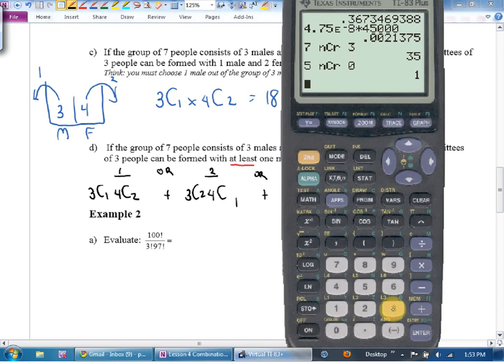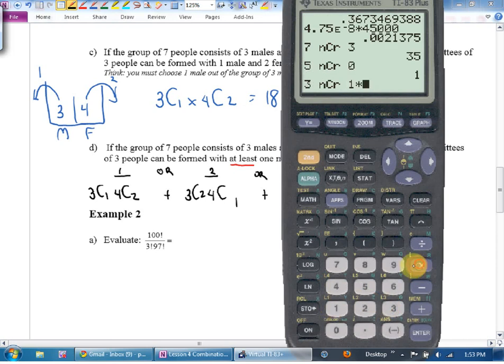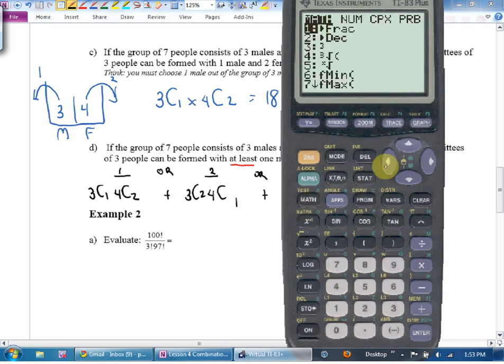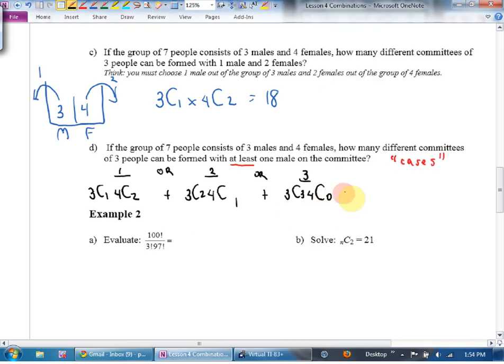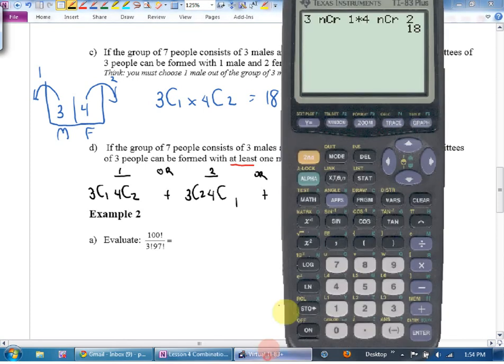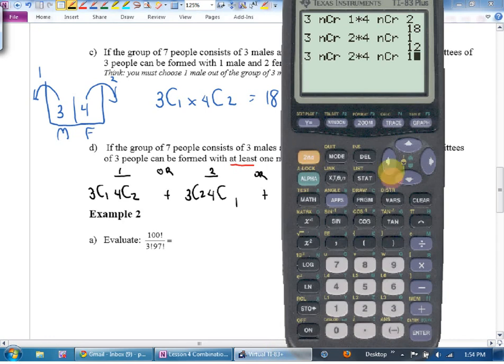I would go three math factorial combinatorics, choose one times four math, left arrow, choose two, and I would write down that. And then what I would do is just go second function, enter, change the one to a two, change the two to a one, and I would go 12 plus. And then I would go second function, enter, change that to a three, change that to a zero. By the way, what is four choose zero? One. What do you get?